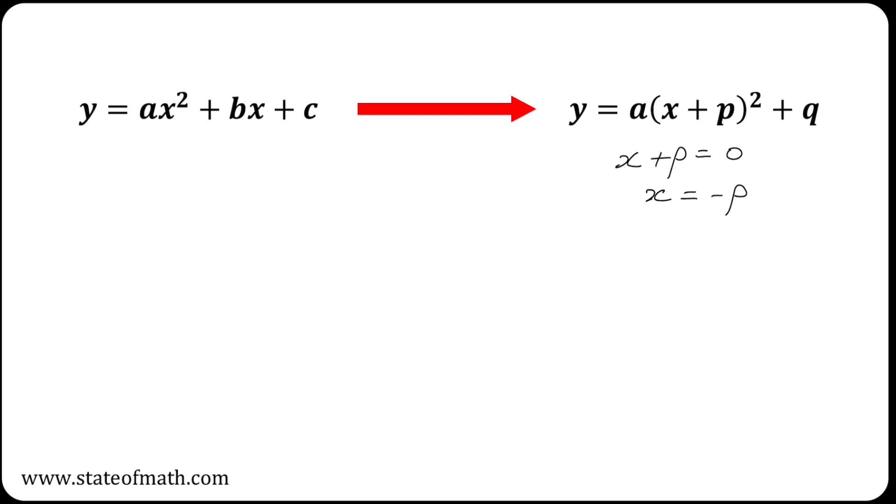Now to find the y coordinate, you just ignore the bracket because it has a value of 0 now. So if this becomes 0, all you are left with is q, hence the y coordinate is equal to q. So the overall coordinate is equal to minus p, q.